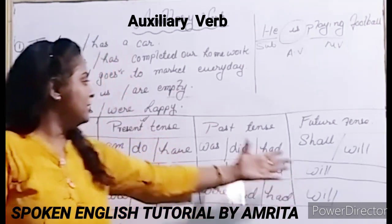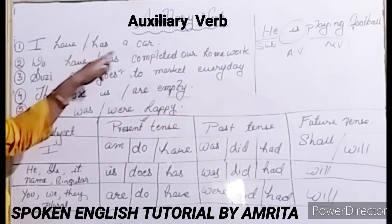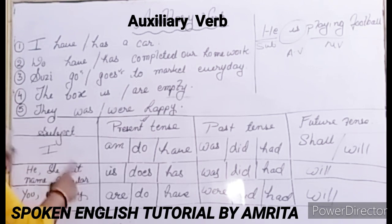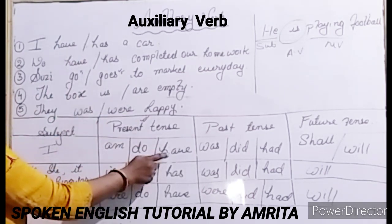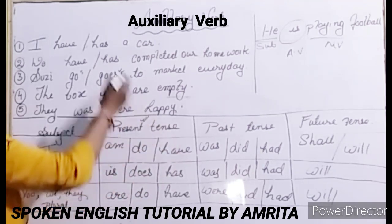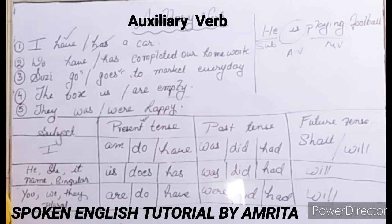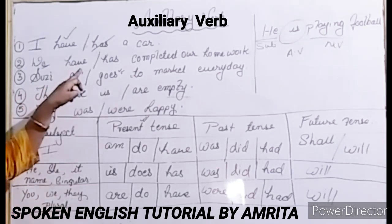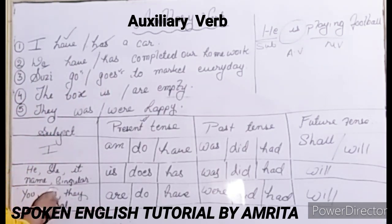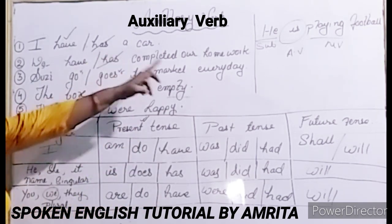I hope you understood this chart. Now let's discuss those sentences again. 'I have a car' or 'I has a car' — with 'I,' we are not going to use 'has.' Has is not in the 'I' column, so 'has' is wrong. 'I have a car' is correct. The second: 'We have or has completed our work.' With 'we,' we have to use 'have.' So 'has' is wrong — 'we have completed our work' is correct.